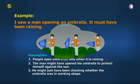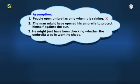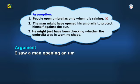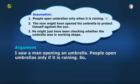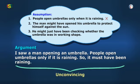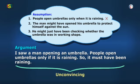Exactly, Vidya. If we state this unstated portion of the argument, the argument will emerge in its full form: 'I saw a man opening an umbrella. People open umbrellas only if it is raining. So, it must have been raining.' This is unconvincing, but it does tell us about the crucial role played by assumptions in argumentation. We don't feel the need to state them when we are arguing, but our argument cannot be strong if our assumptions are not convincing.